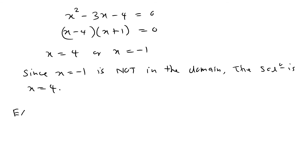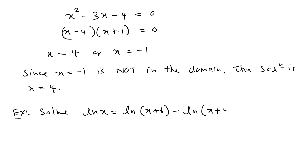As an exercise, solve: ln x = ln(x + 6) − ln(x + 4). The answer should be x = 6. The process is: find the domain, combine log terms on each side to one log, apply the one-to-one property, solve the resulting algebraic equation, and check against the domain.